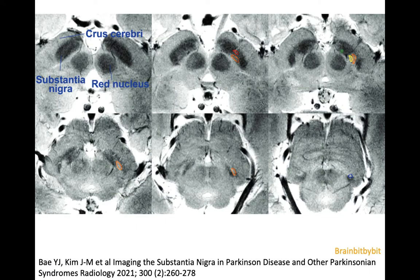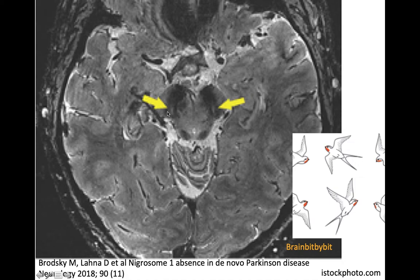The dopaminergic neurons are not distributed evenly in the pars compacta of the substantia nigra — there are nigrosomes where dopaminergic neurons are more concentrated. The largest is nigrosome 1, outlined here in orange. These are 7 tesla images going from cranial to caudal, and you can see five different nigrosomes. The substantia nigra extends very inferiorly, down to the level of the inferior colliculus, much lower than you might think. Nigrosome 1 gives the substantia nigra the appearance of a swallowtail on 7 tesla images, with a bifid dorsal part.